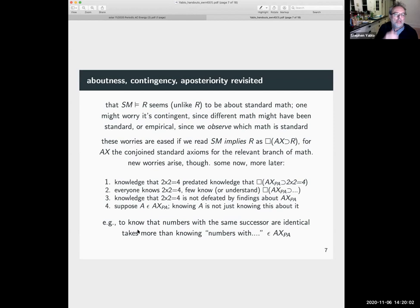But two times two equals four is not already modal on the face of it. The idea that standard mathematics implies r departs from r in other ways too. So I want to revisit these notions of aboutness and contingency and a posteriority that standard mathematics implies r seems, unlike r, to be about standard mathematics, just as according to the Dickens novel Oliver Twist lived in London seems like it's a little bit about the Dickens novel. One might worry that it's also a contingent claim.